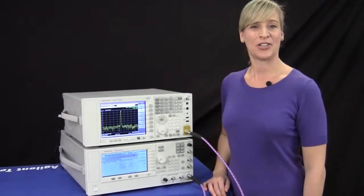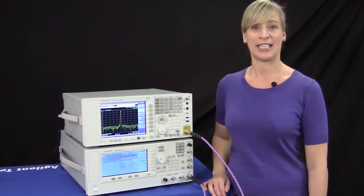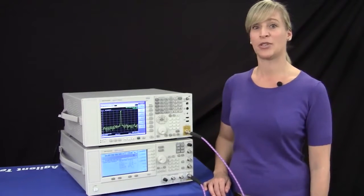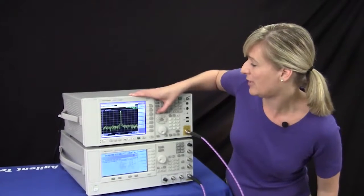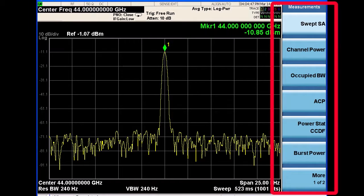For my next demonstration I'd like to highlight the measurements and applications available on the EXA. The EXA comes with standard built-in power suite measurements which are located under the measure key. You can see we have measurements such as channel power, occupied bandwidth, and adjacent channel power.